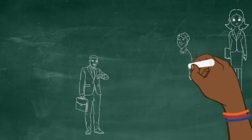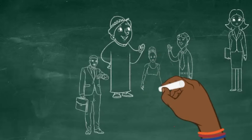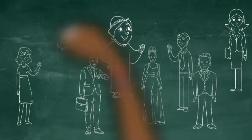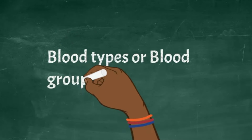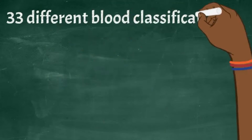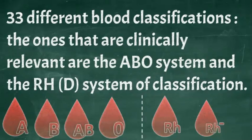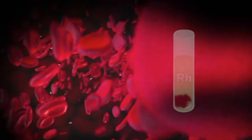Now to be sure, you cannot tell the differences between blood types and blood groups based on a person's skin color, for instance, or a person's hair texture. These are not shortcuts to knowing what blood group an individual has. There are a total of 33 different classification systems for blood that have been recognized. But the two that you need to worry about, because they are clinically relevant, are the ABO system and the RH system. Before we get into the nitty gritties, a bigger picture.